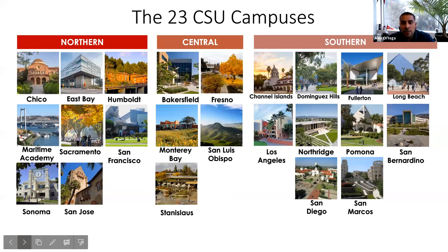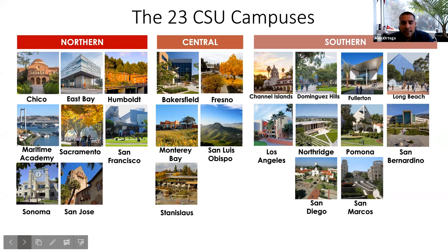A visual breakdown of the 23 CSU systems by region. In the northern region, you have Chico, East Bay, Humboldt, Sacramento, San Francisco, and Sonoma — the furthest school up north is Humboldt State, known as the Lumberjacks. In the Central Valley, they have five institutions including Bakersfield. And in the southern region where Cal State Fullerton is located, there are a total of 10 schools. Cal State Fullerton is the only school in Orange County. In Los Angeles County you have Cal State LA, Pomona, Long Beach, and Dominguez Hills. Down south you have San Diego and San Marcos — San Diego is the furthest school down south.